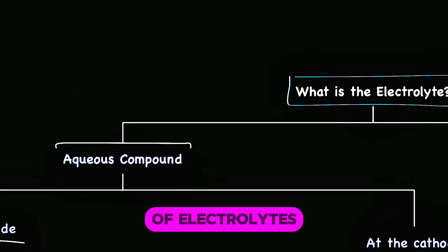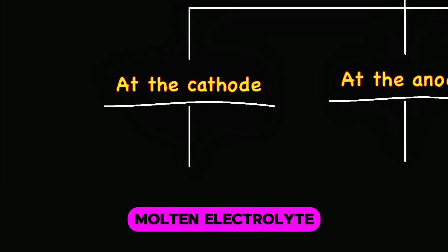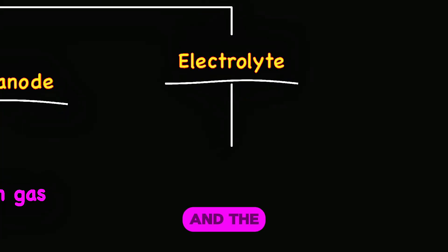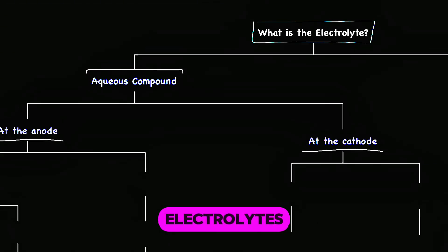There are two types of electrolyte: aqueous and molten. In molten electrolyte, the product at the cathode is going to be the metal. You get gas at the anode and the electrolyte itself gets used up. For aqueous electrolytes, products at the cathode depend on the reactivity of the metal.